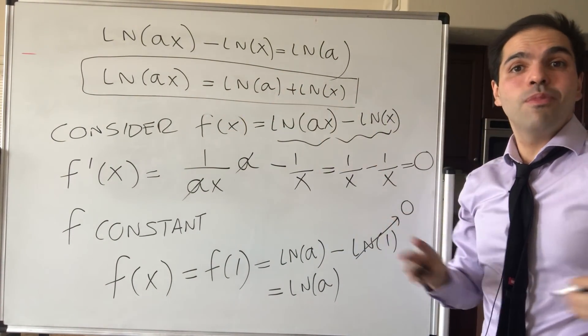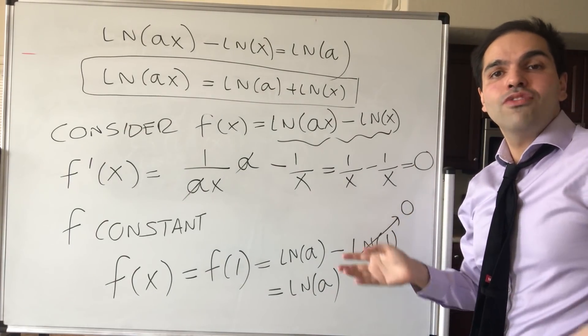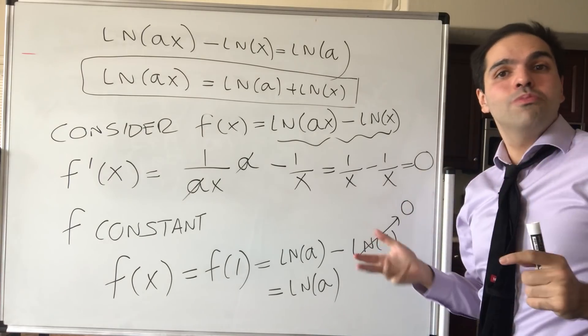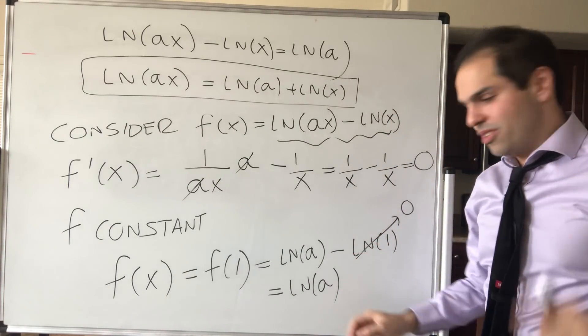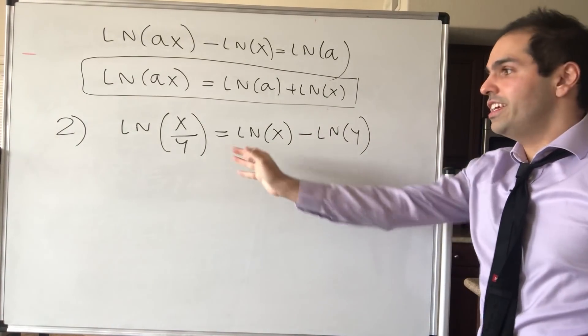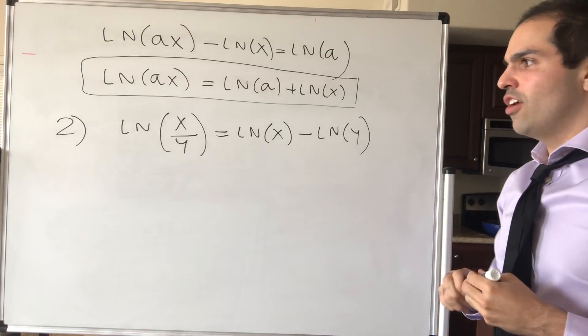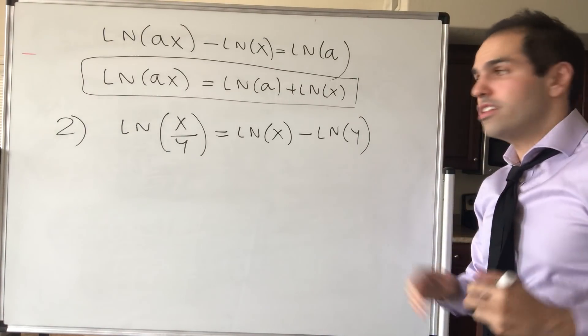So from this you do get this multiplicative property of ln, and it turns out for the quotient property you don't even need to do any calculus. So now let's just prove this property: ln of x over y equals ln of x minus ln of y. And notice the following.